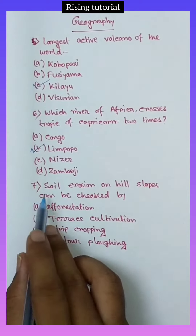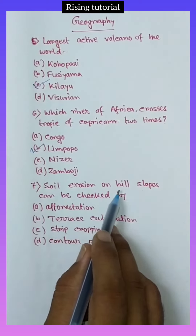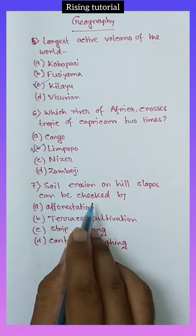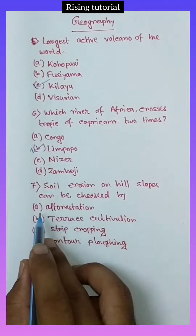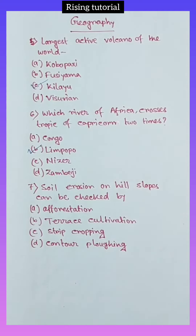Number 7. Soil erosion on hill slopes can be checked by: option A, Afforestation; option B, Terrace cultivation; option C, Strip cropping; option D, Counter ploughing. Comment the answer. Number 8.